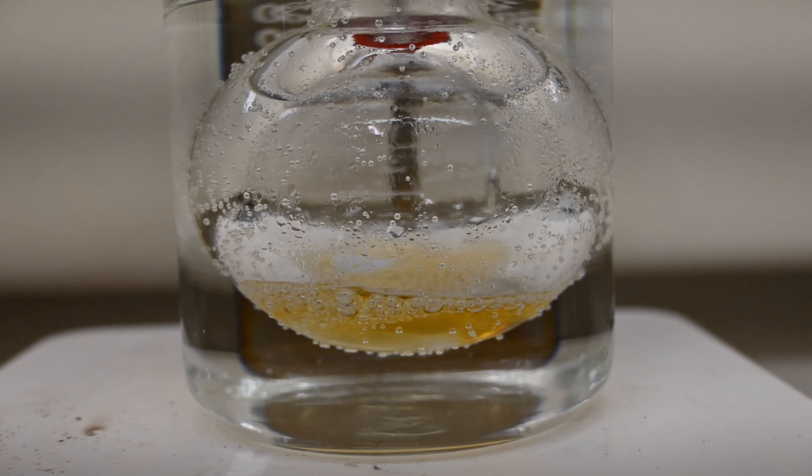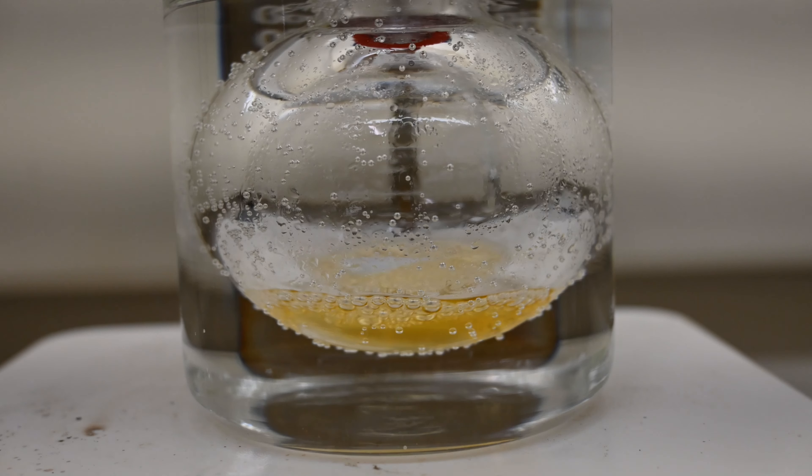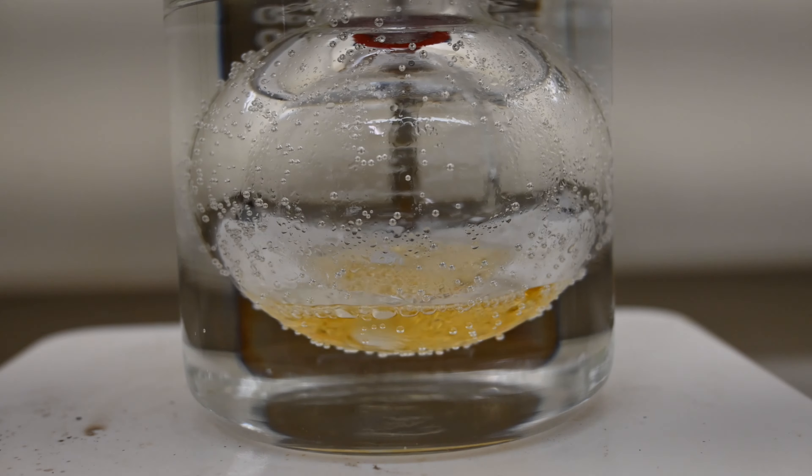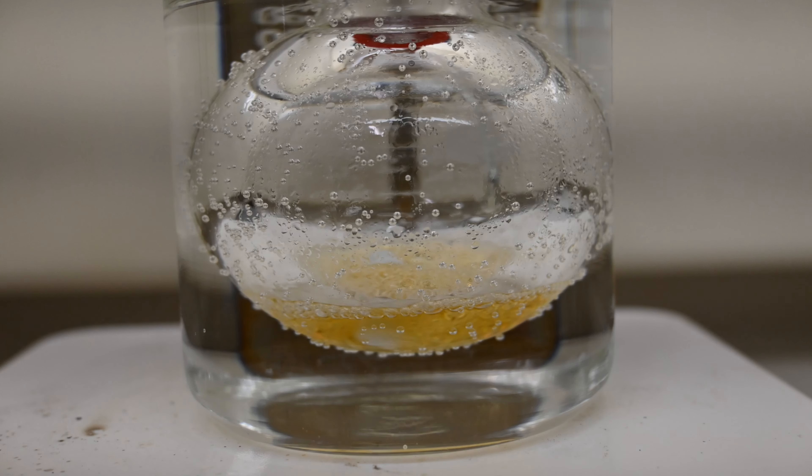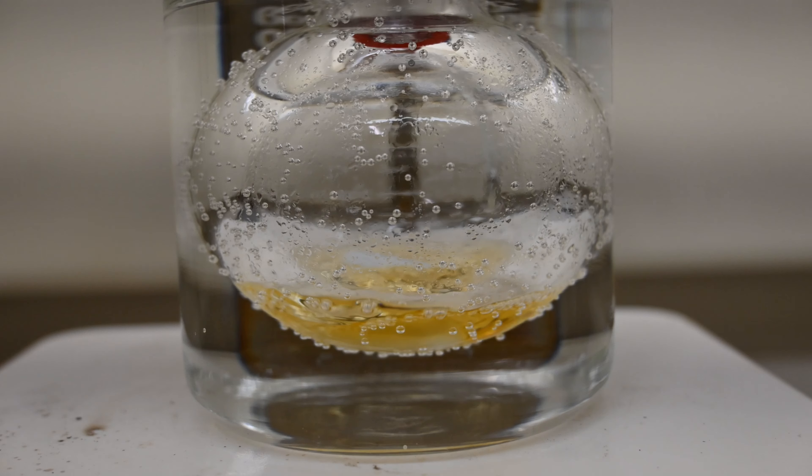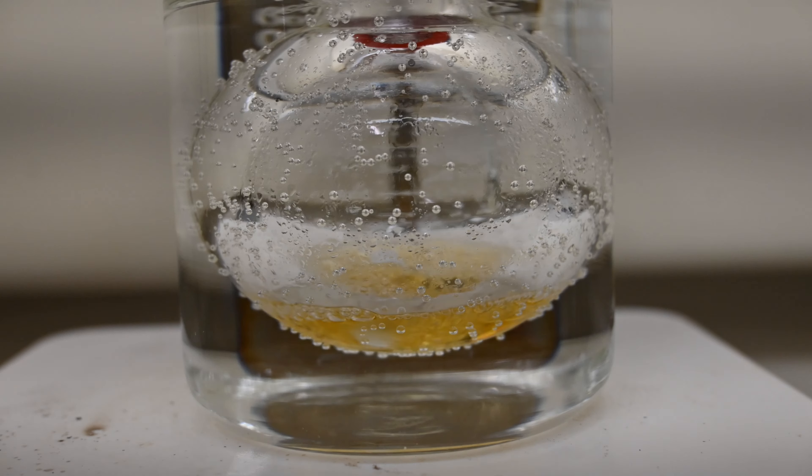The reaction is typically conducted under reflux to provide the necessary energy for the reaction to proceed and to ensure thorough mixing of the reactants. The evolution of gas during the reaction indicates progress, and it's crucial to conduct this experiment under a fume hood due to the toxic nature and corrosive nature of the byproducts. This is why it's important, if not using a fume hood, to use a sodium hydroxide gas trap.